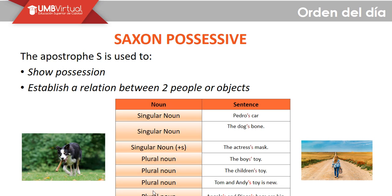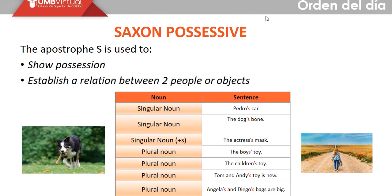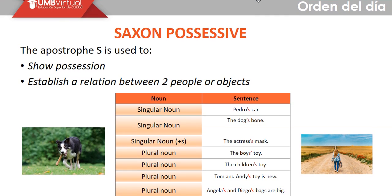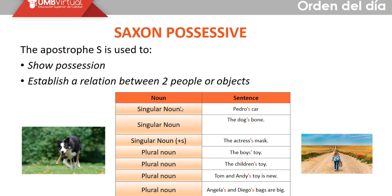Here we have the use of the Saxon possessive. The apostrophe S is used in two ways: the first is to show possession about an object, a place, or someone or something, and the second is to establish a relation between two people or objects. In the first example we have 'Pedro's car', which uses a singular noun.